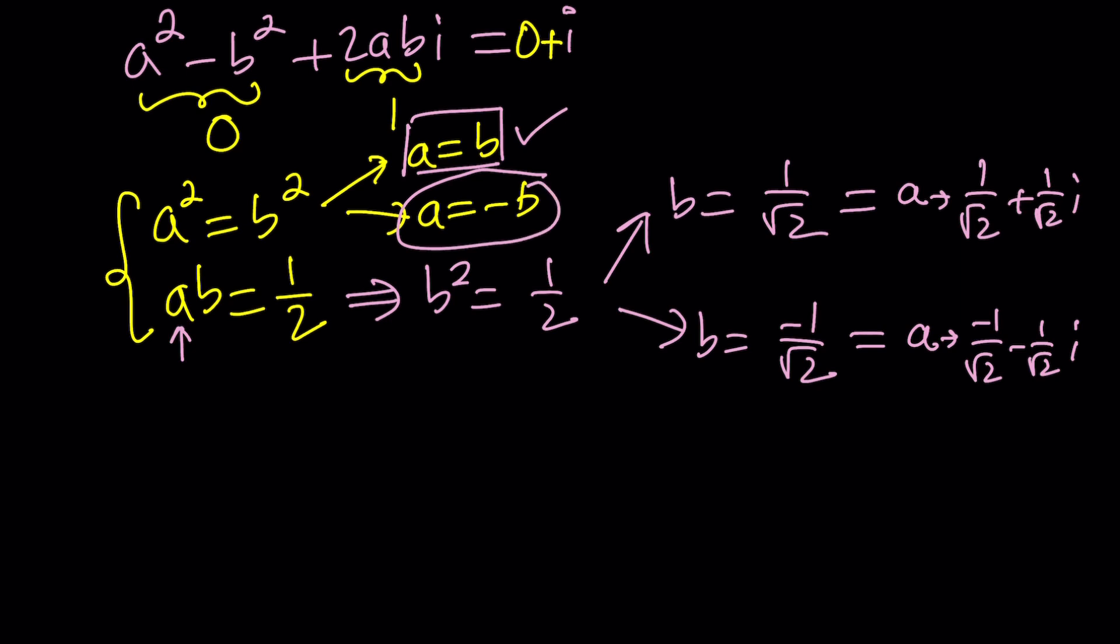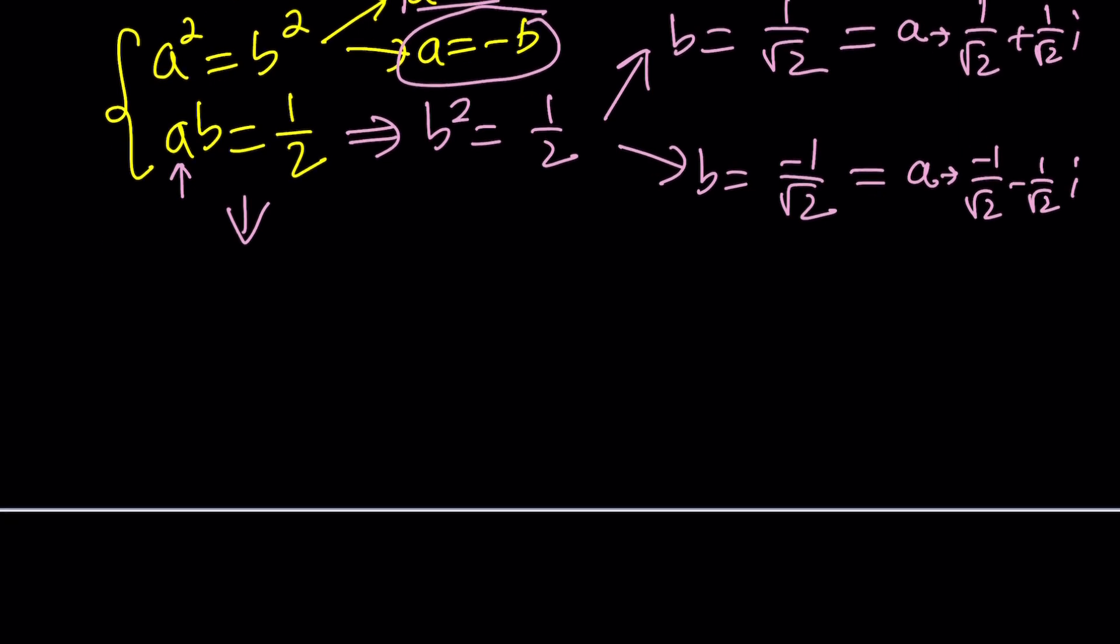What happens if a is negative b? If a is negative b, from here, we can replace a with negative b. We get negative b squared equals 1 half, which means b squared is negative 1 half. But b is not a real number. But b is supposed to be a real number. Contradiction, we can't go with this.